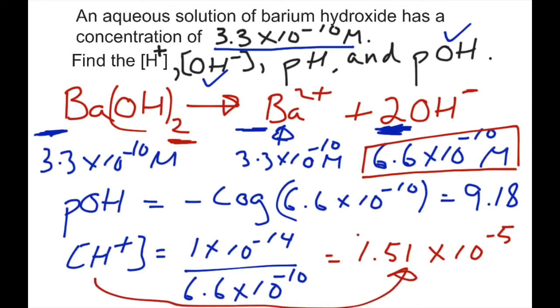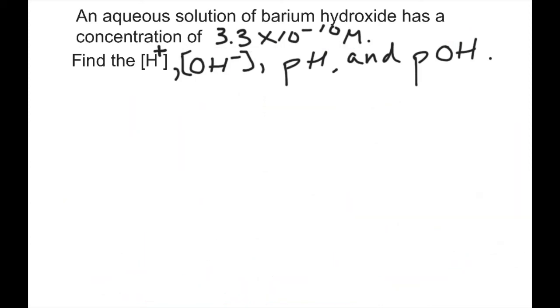So, once again, we have our H plus concentration right here. It's 1.51, approximately, times 10 to the negative 5. We have our OH minus concentration right here. And over here, we have our POH. And we have to find one more guy. So, let's flip to the next page.